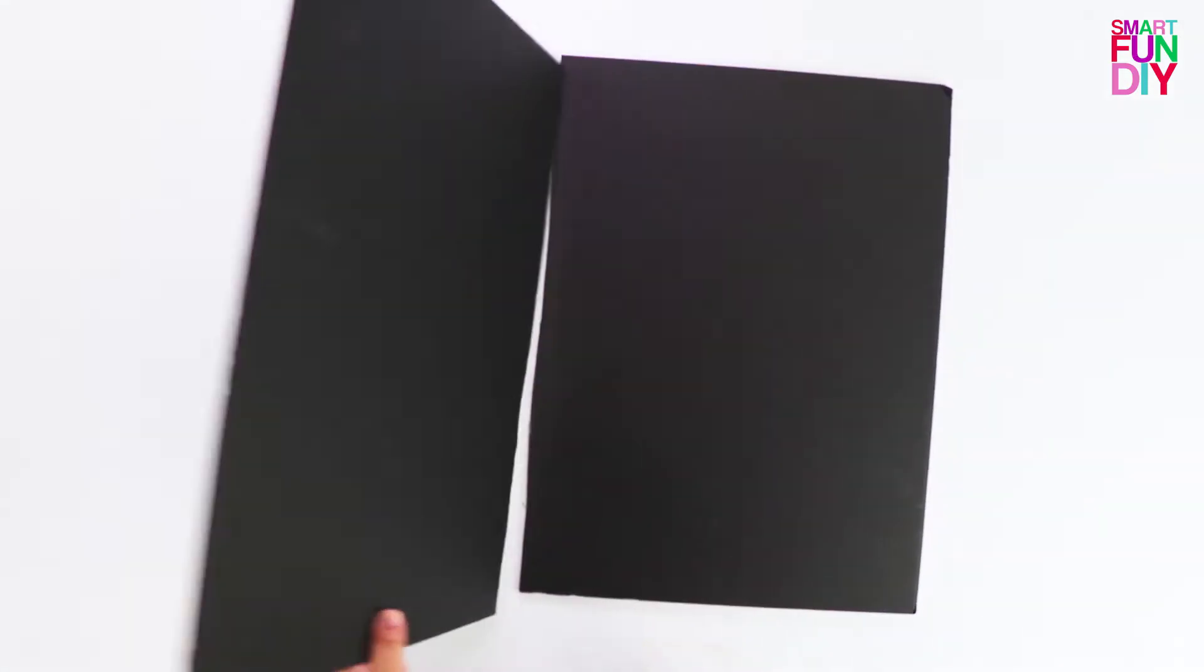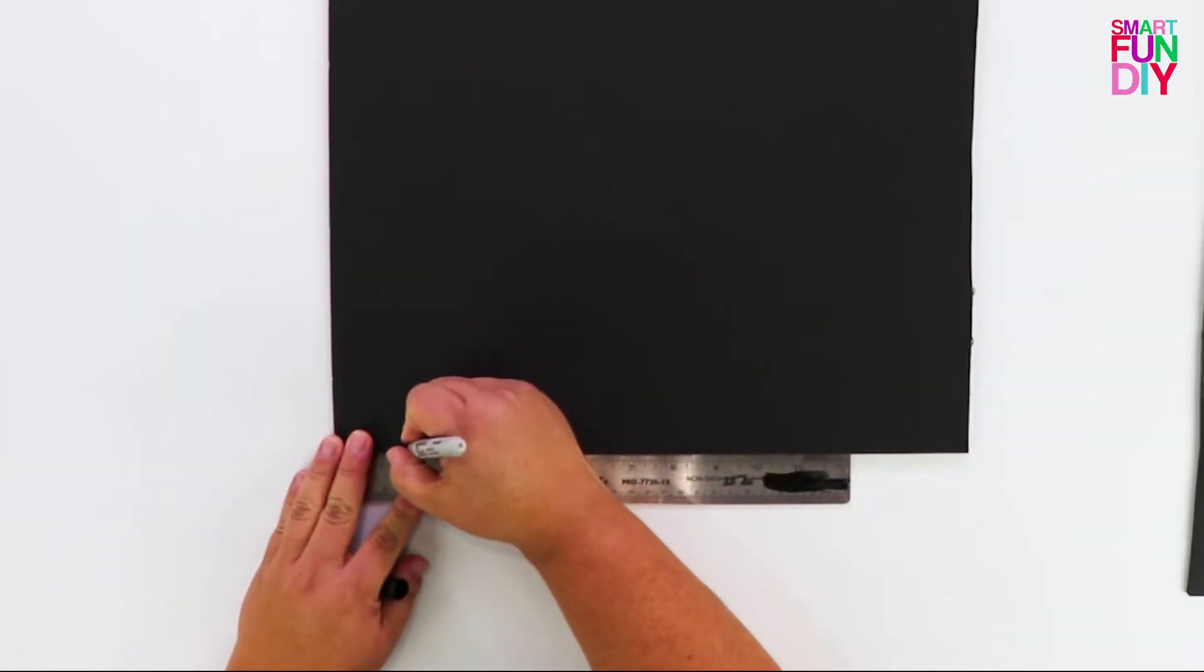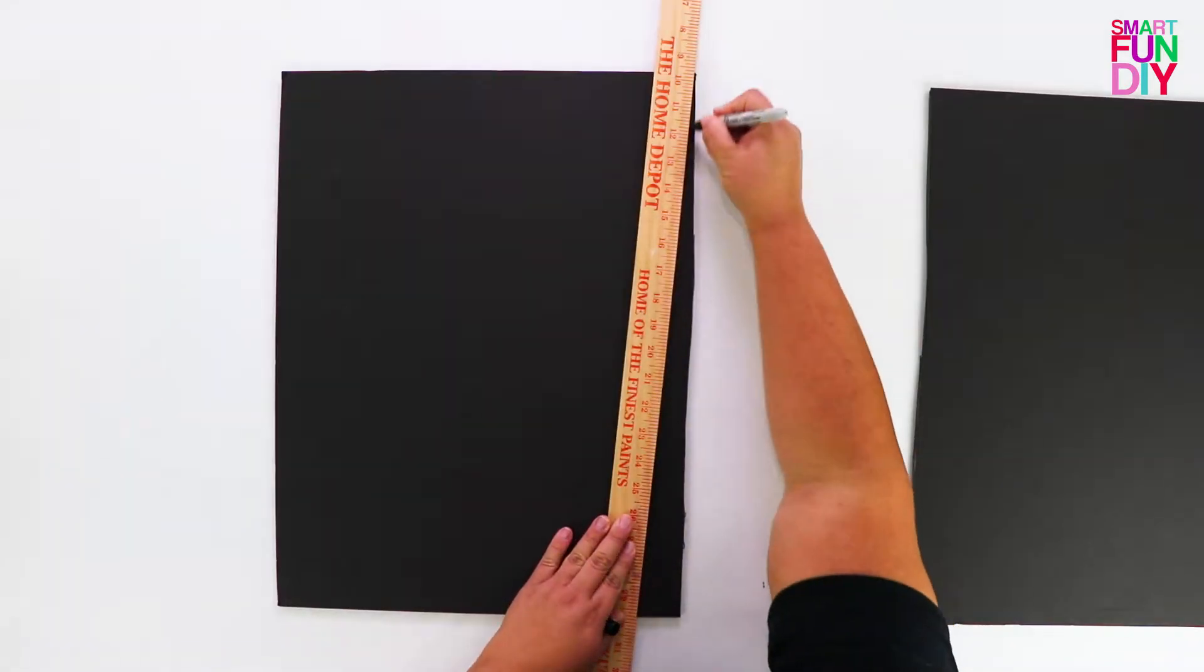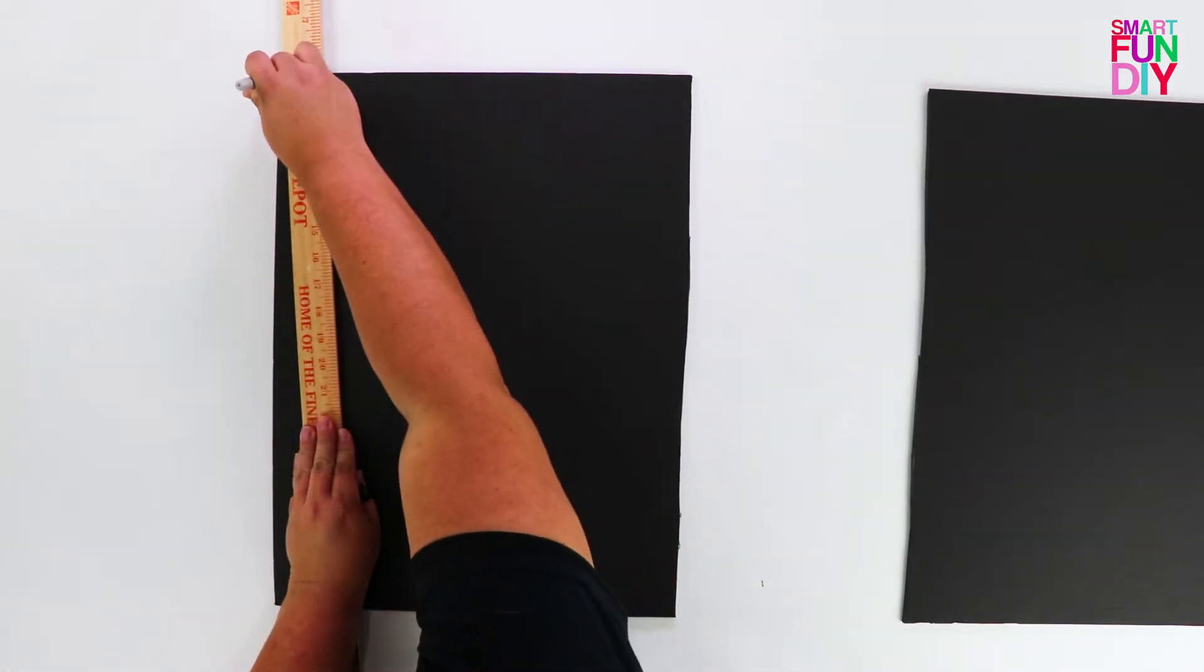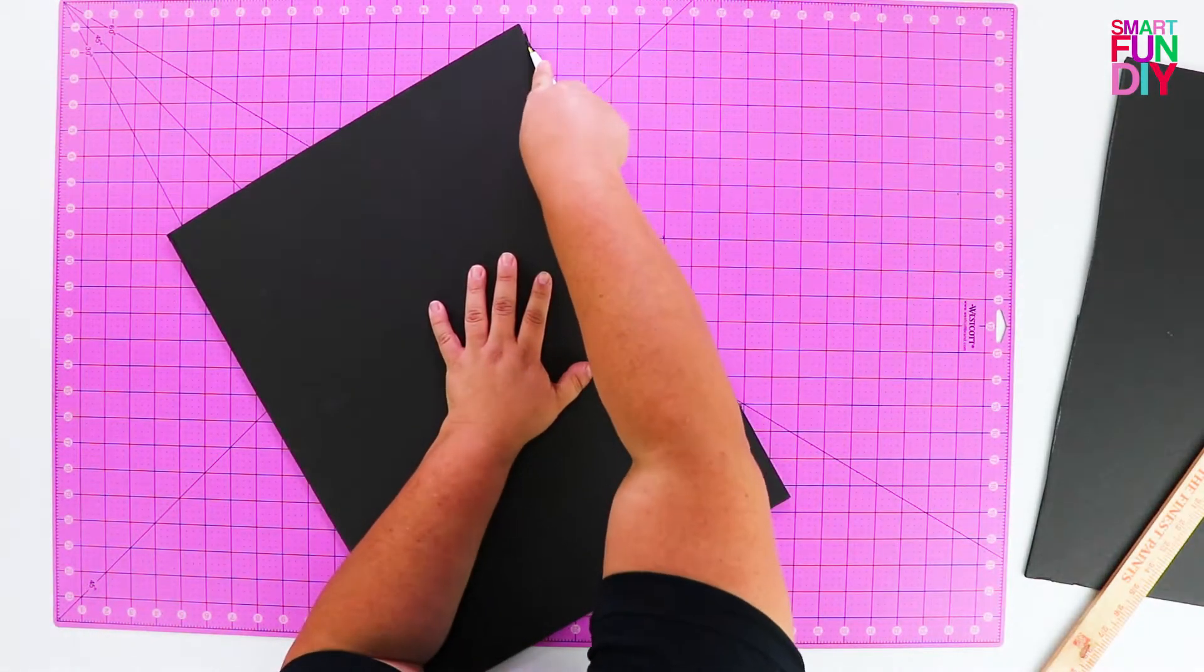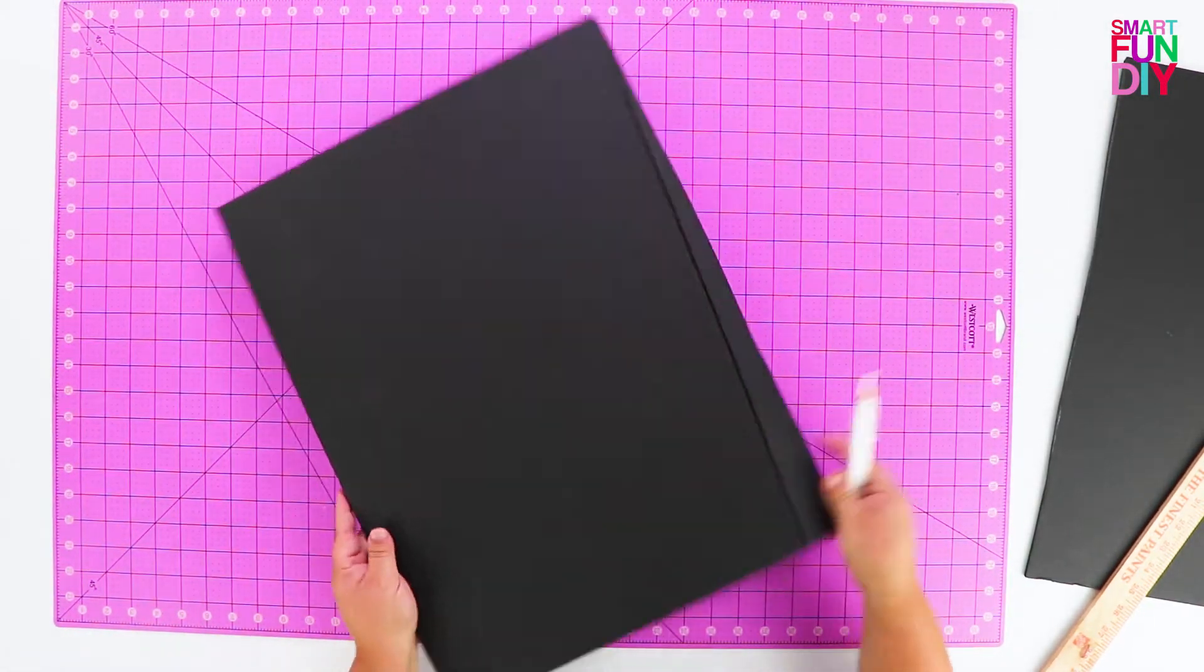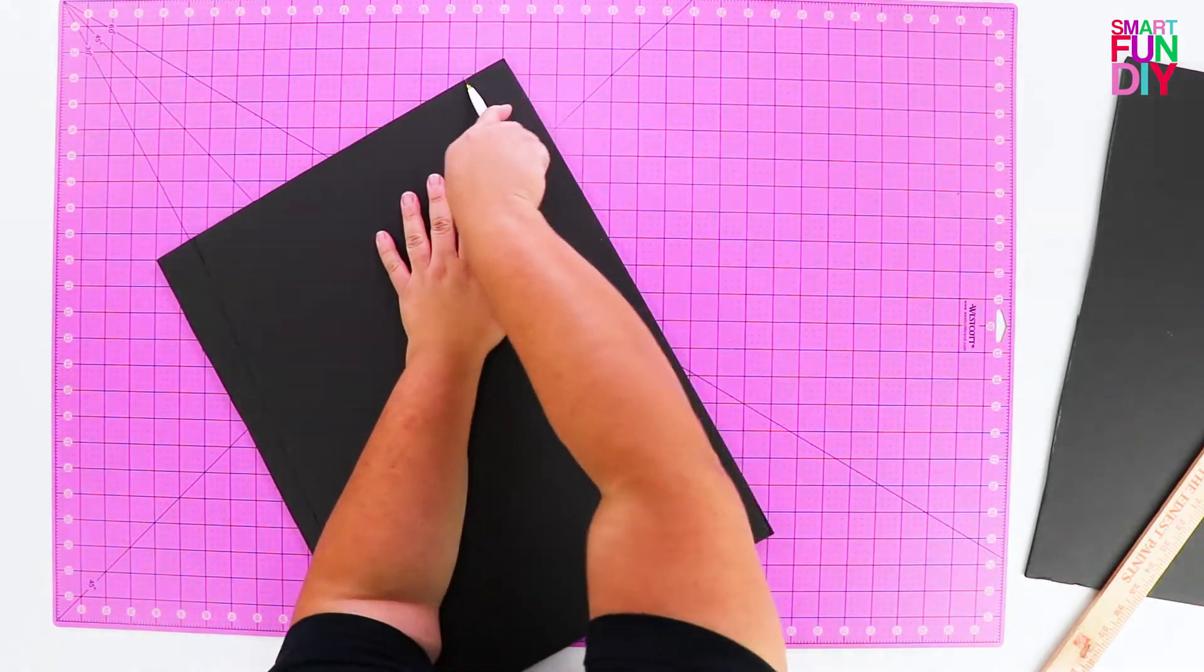If you want all of the dimensions for how to cut everything in this video, please go check out the blog post that is linked down below, where I share all the actual dimensions. You're going to mark in about an inch and a half on each side to make this a trapezoid shape, because even though Lego bodies are boxy, they are tapered at the top.